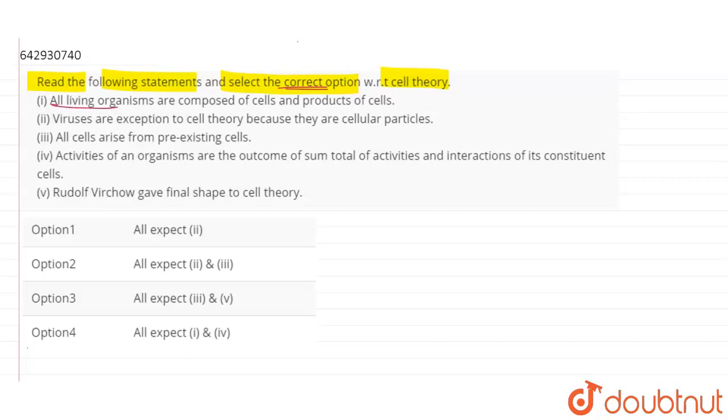All living organisms are composed of cells and are products of cells. So the first statement of the cell theory that Schleiden and Schwann gave us, the first statement resembles it. That the viruses are the exception to cell theory because they are cellular particles. Sorry, so here is a little typing mistake. They will be acellular particles. Look, viruses are exceptions in presence of cell theory. There was no mention of all cells arise from pre-existing cells. So this is our first statement.